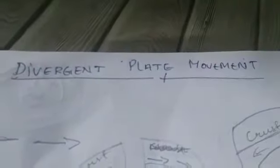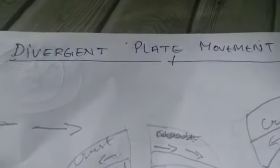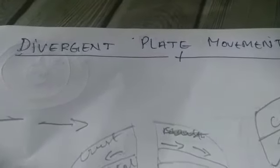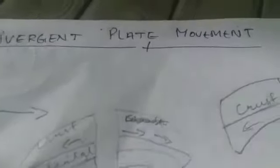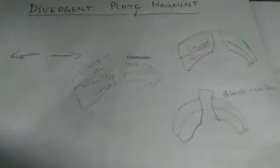Divergence plate movement: when two plates move away from each other due to tensional force, that is called divergence. Sometimes parts of the earth's crust are uplifted by internal force, forming block mountains. A main example of block mountains in India is the Satpura Range.